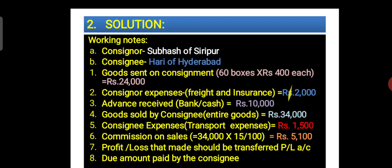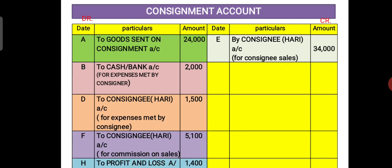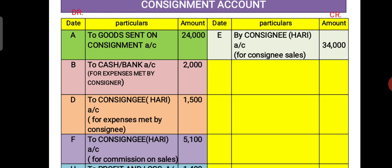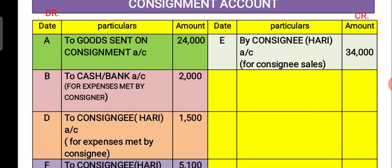Now we can go to prepare the Ledger Accounts in the Books of Consigner. The first account is Consignment Account. On the credit side of Consignment Account, there is only one item — that is Consignee Sales. The entire stock was sold by the Consignee for Rs. 34,000, so that is taken on the credit side of the Consignment Account.